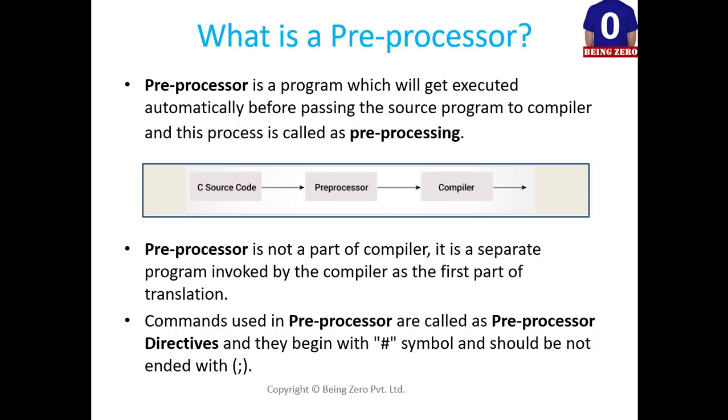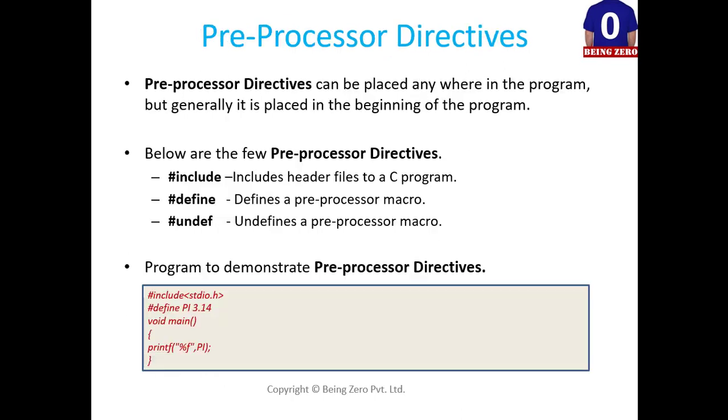Now, let's understand more on preprocessor directives in our next slide. Preprocessor directives can be placed anywhere in the program, but generally it is placed in the beginning of a program. Below are the few preprocessor directives. For example, #include, it will be used to include the header files to a C program. Then we have #define which will define a preprocessor macro and #undef will undefine a preprocessor macro.